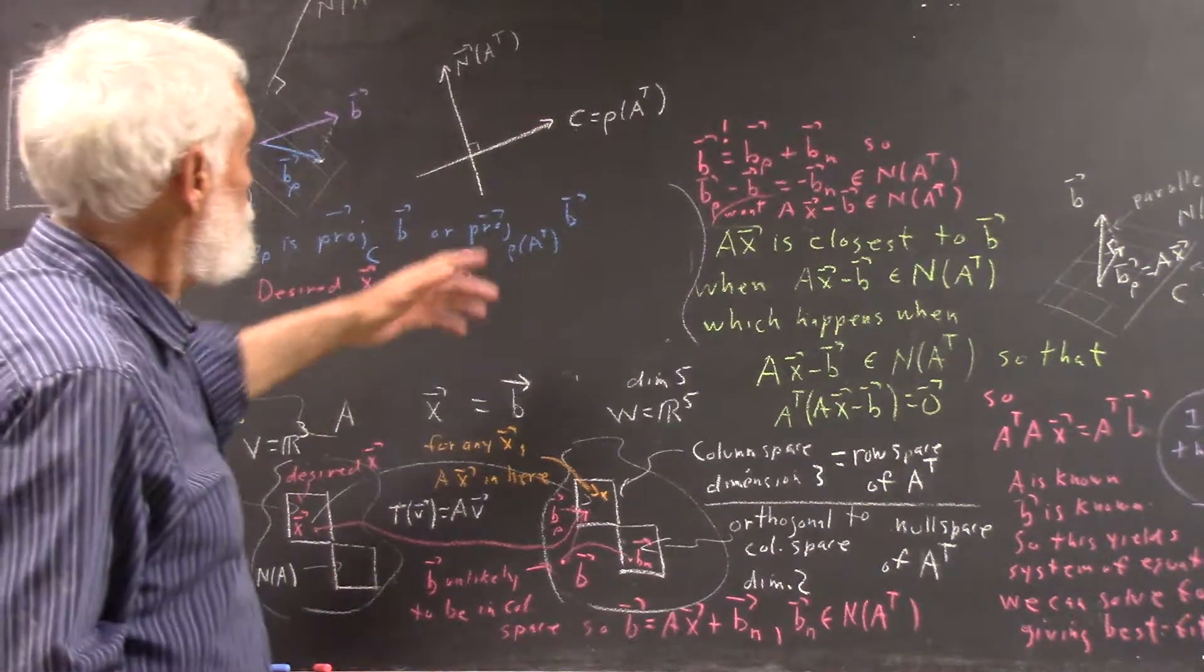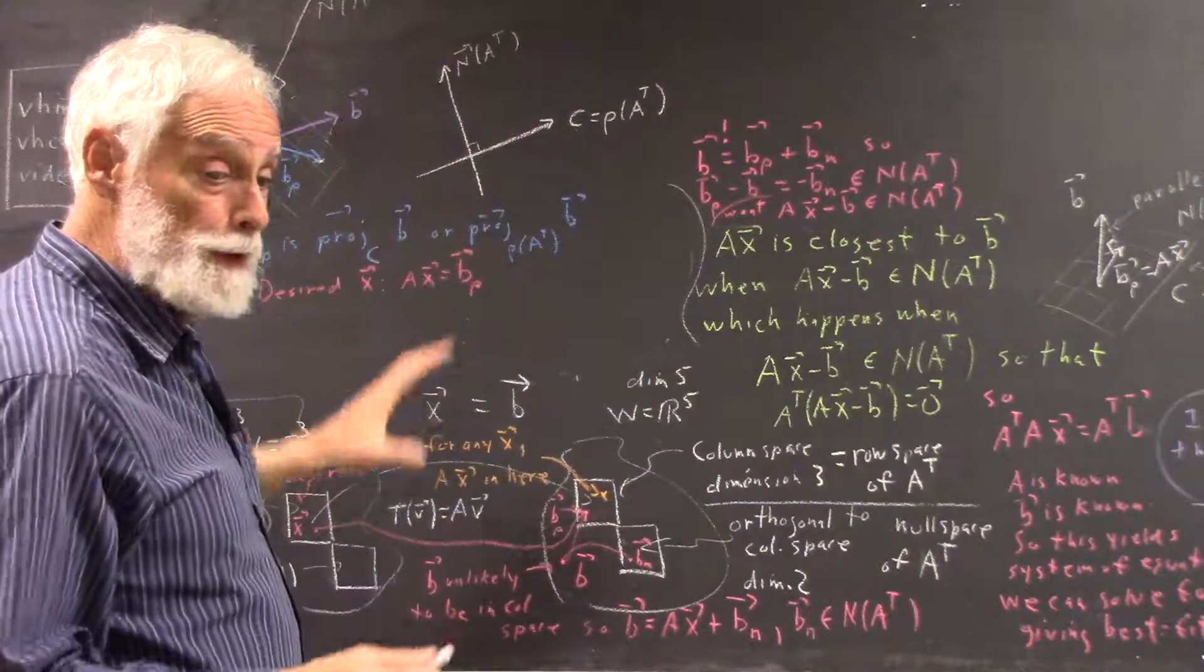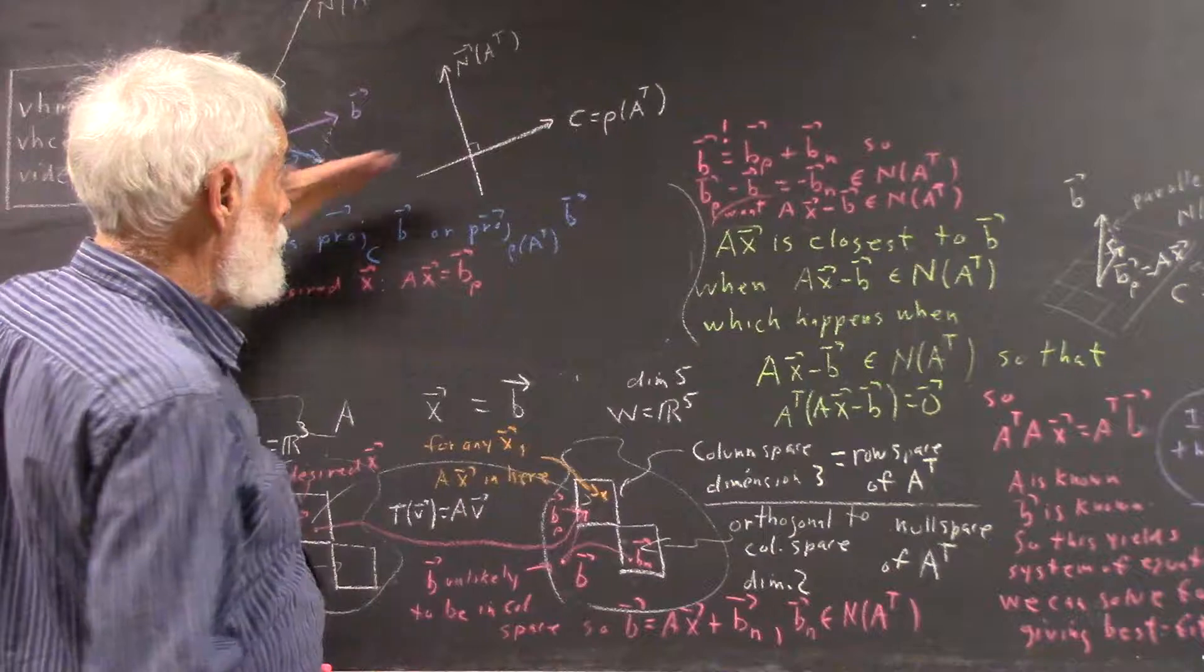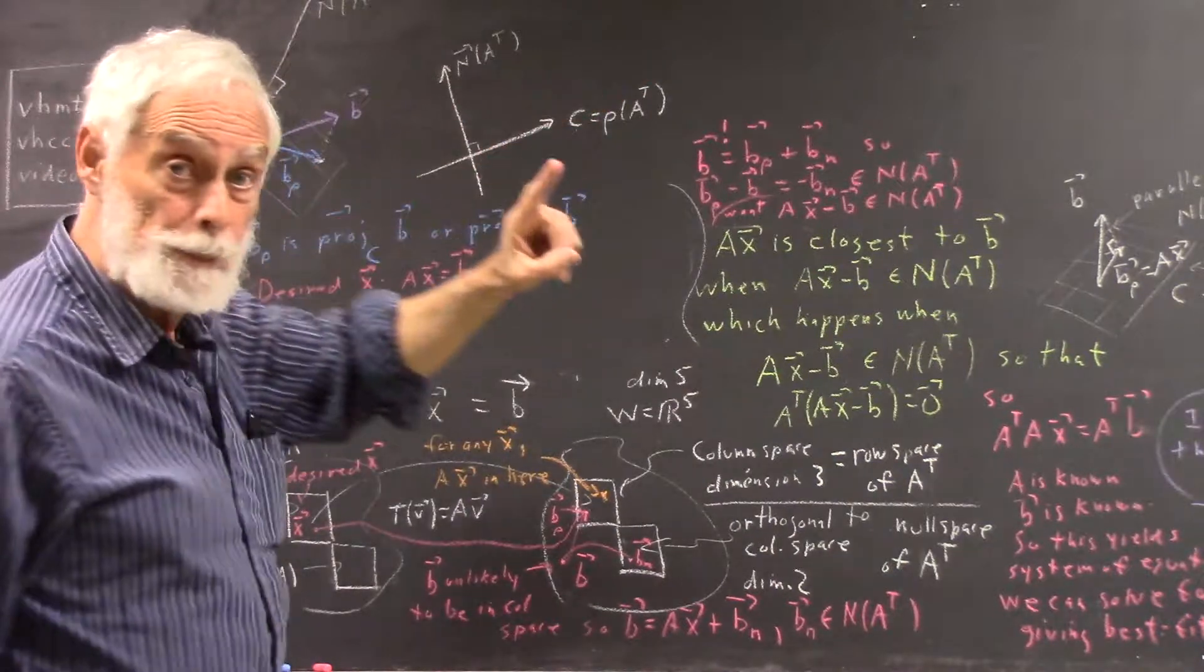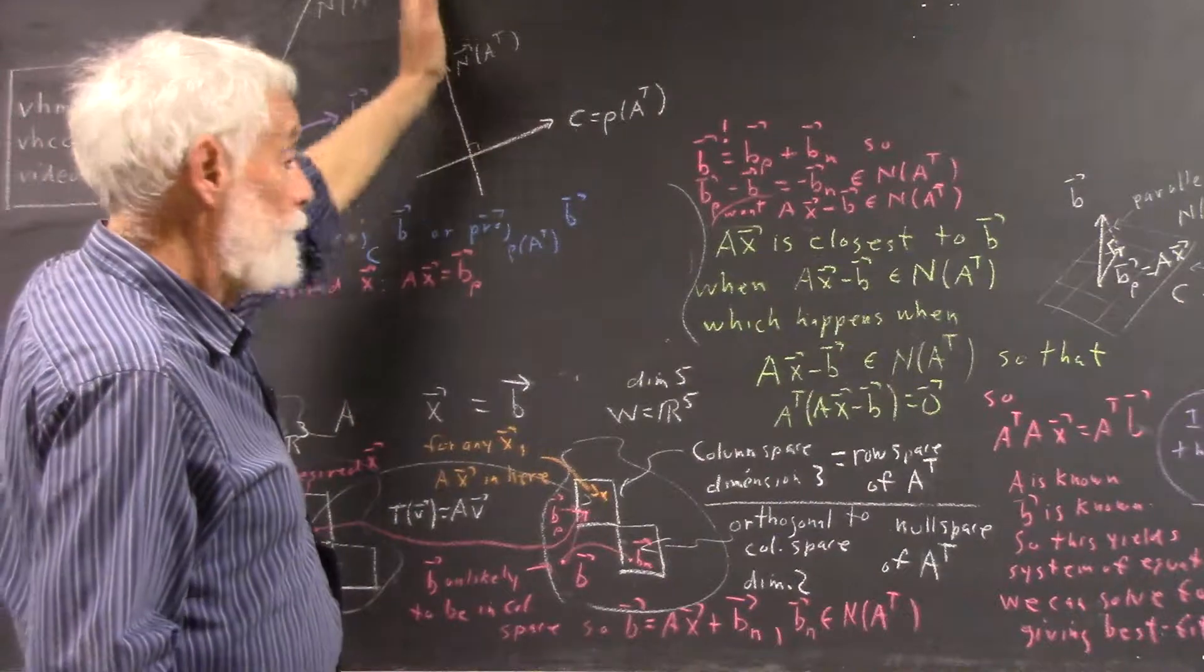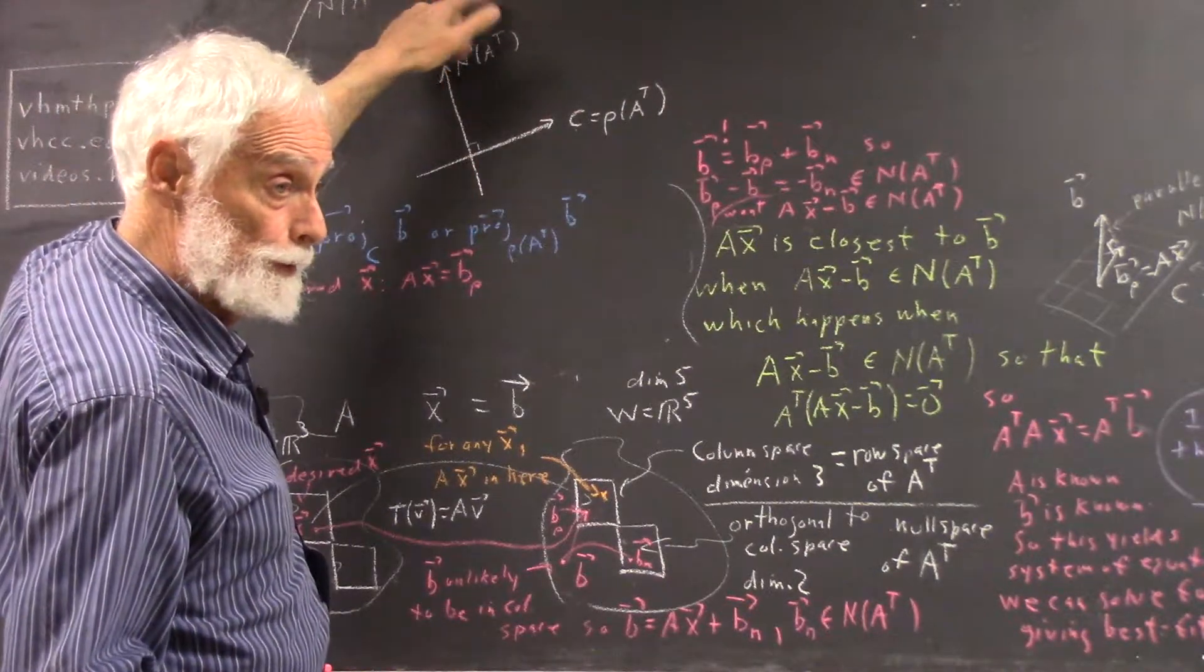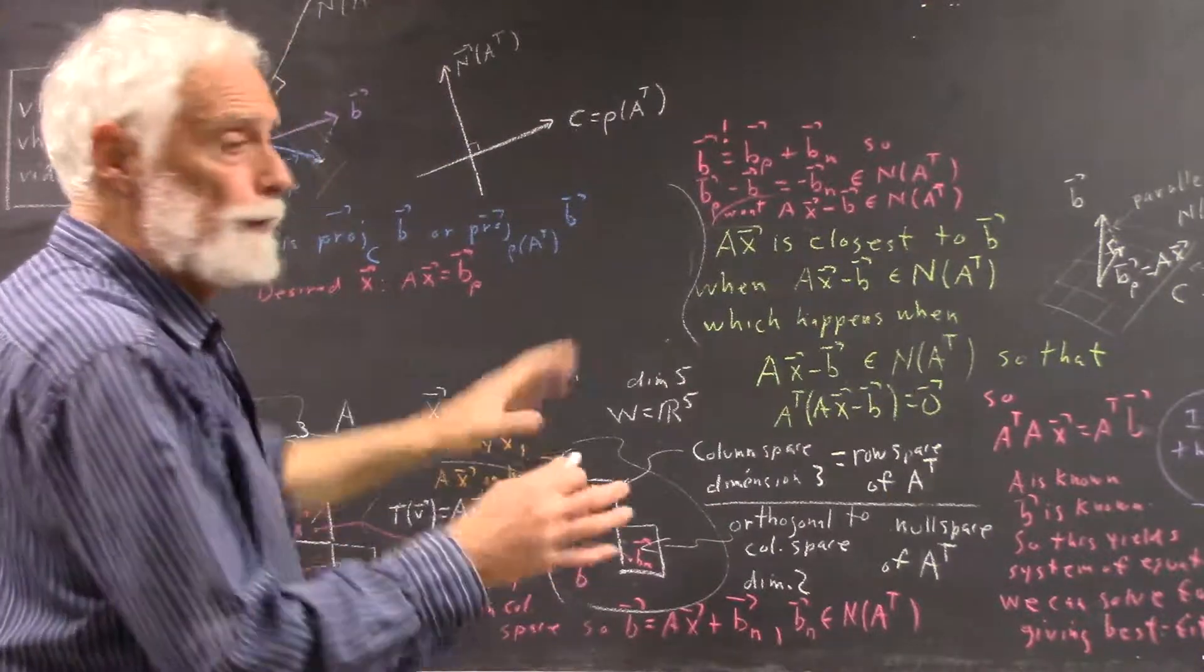And we just need to understand that this could be a three dimensional space, it could be a 50 dimensional space. It's not going to actually be a line unless it's one dimensional. But we're going to still use this to represent it. And we're going to use this line to represent N of A transpose, the null space of the transpose matrix, whatever its dimension.